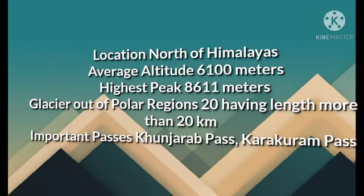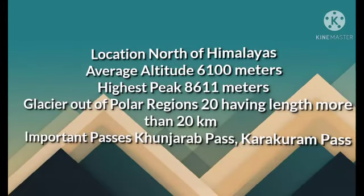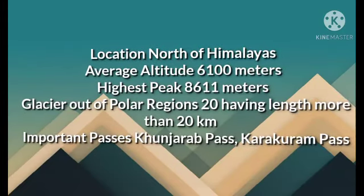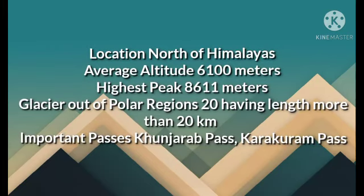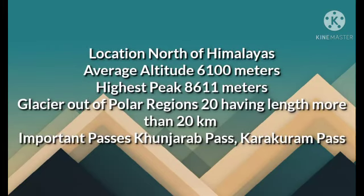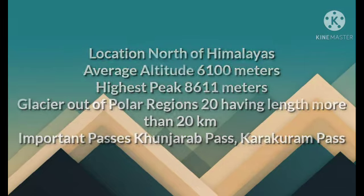As one of the highest mountain ranges of the world, the Karakoram hosts most of the glaciers outside the polar region. More than 20 glaciers have a length of more than 20 kilometers. The people of the area are connected through different passes, including the Khunjerab Pass and the Karakoram Pass.